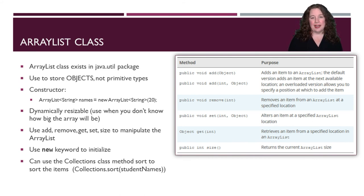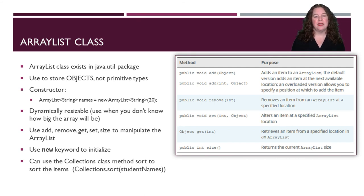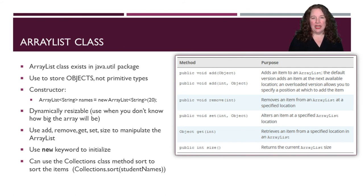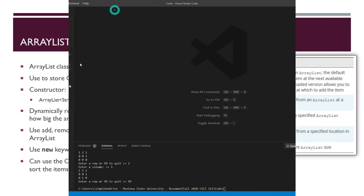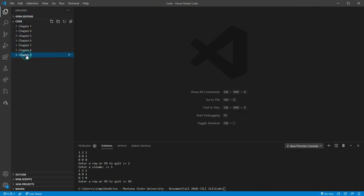The Collections class has a class method to sort items that are in an ArrayList. An ArrayList is of type Collection so it can use the Collections class method. Just like with sorting objects with regular arrays, you do need to add a little bit of extra code to make your sort work right.